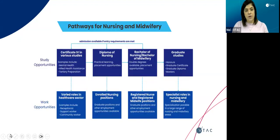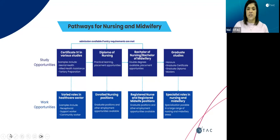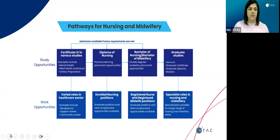For specific pathways in nursing and midwifery, you can start with a certificate four in a range of different studies, with varied roles in the healthcare sector available at exit points. The next level is a diploma of nursing — more practical and hands-on with placement opportunities and nursing positions available upon completion. From there you may enrol in a bachelor of nursing or midwifery, becoming a registered nurse or midwife. Finally, you may choose graduate studies to specialise in a particular field.